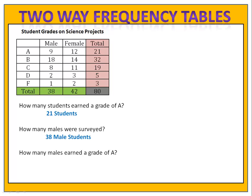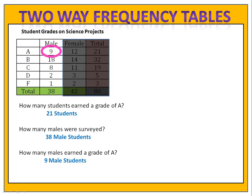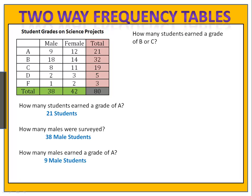How many males earned a grade of A? We look at the males — nine males earned a grade of A. How many students earned a grade of B or C? Thirty-two earned a B and nineteen earned a C — that's a total of fifty-one students.